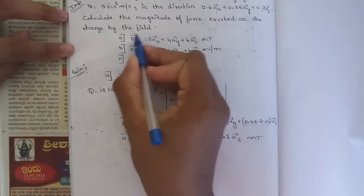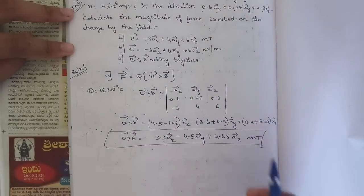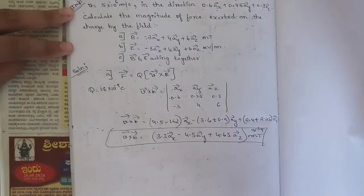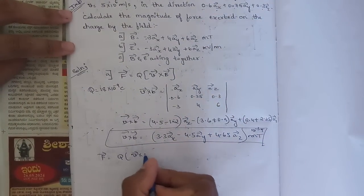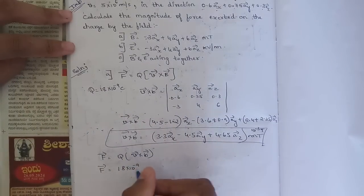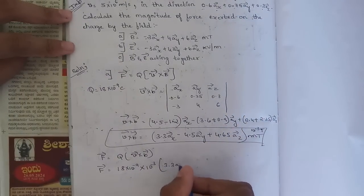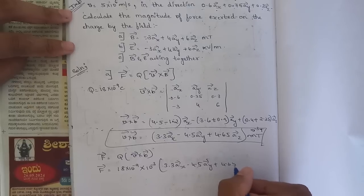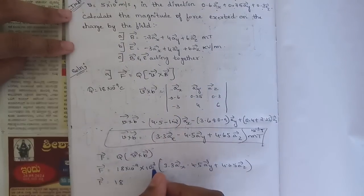Since the magnetic field was given in millitesla, v × B = (3.3ax − 4.5ay + 4.65az) × 10^−3 tesla. Now F = q(v × B). So F = 18 × 10^−9 × 10^−3 × (3.3ax − 4.5ay + 4.65az), and we also multiply by the velocity magnitude 5 × 10^6.